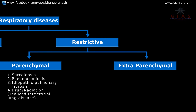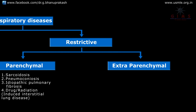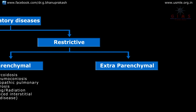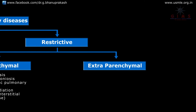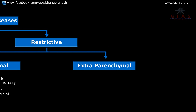The extra-parenchymal diseases can be studied under two headings: the first is neuromuscular diseases, and the second are diseases associated with the chest wall.